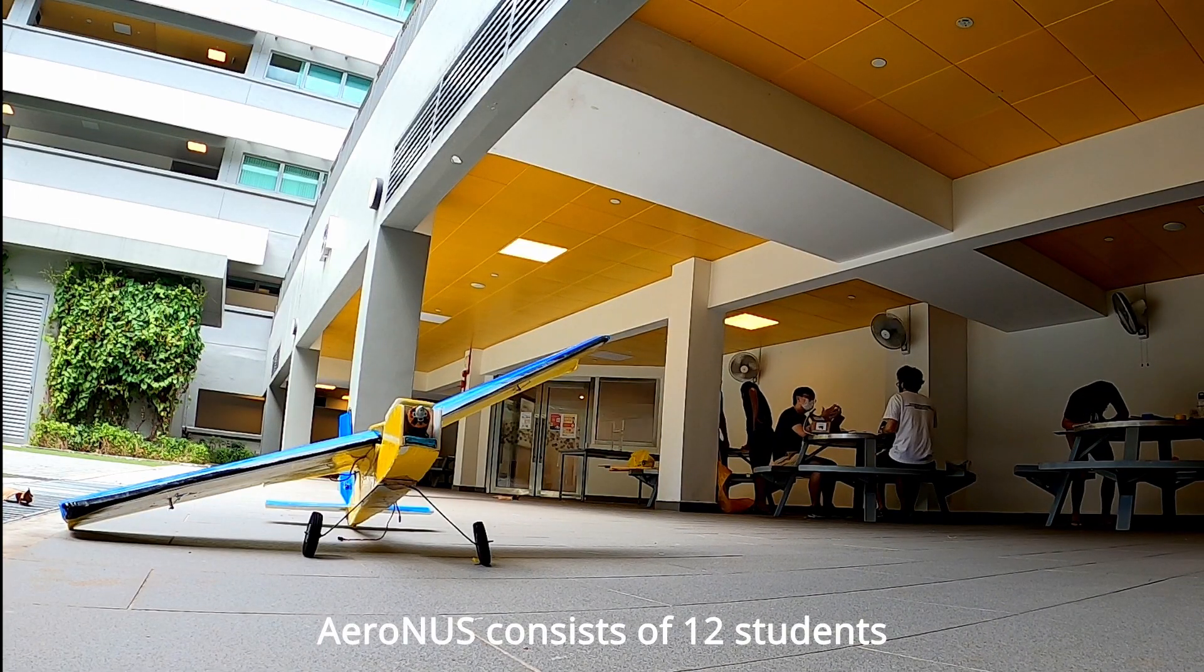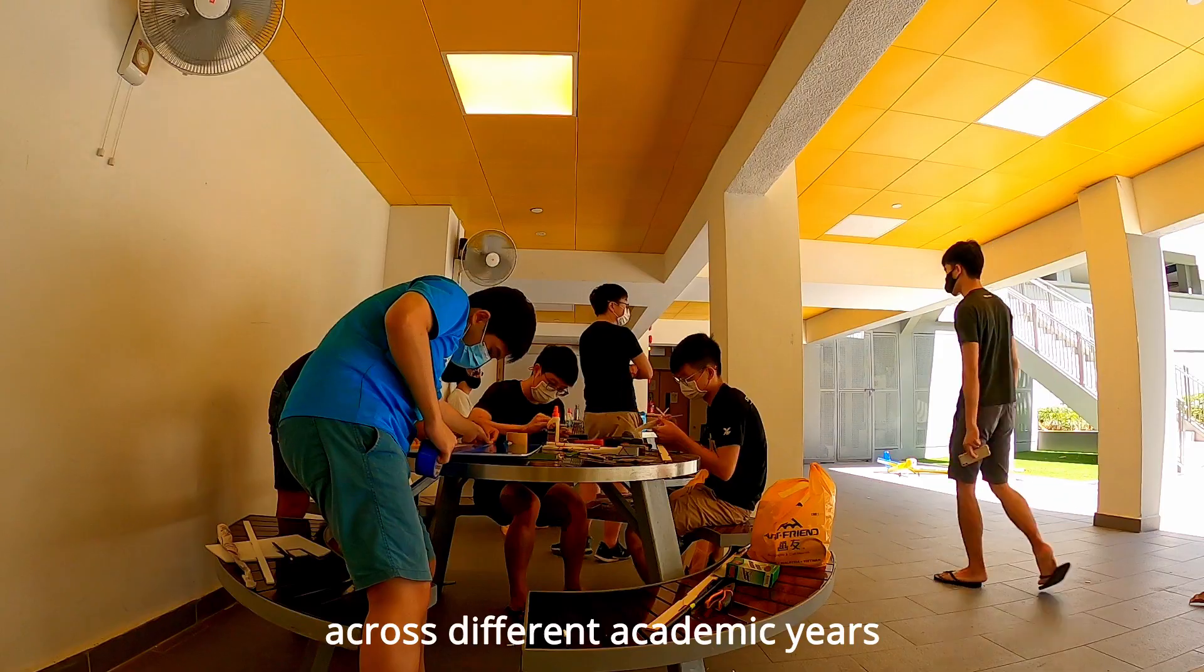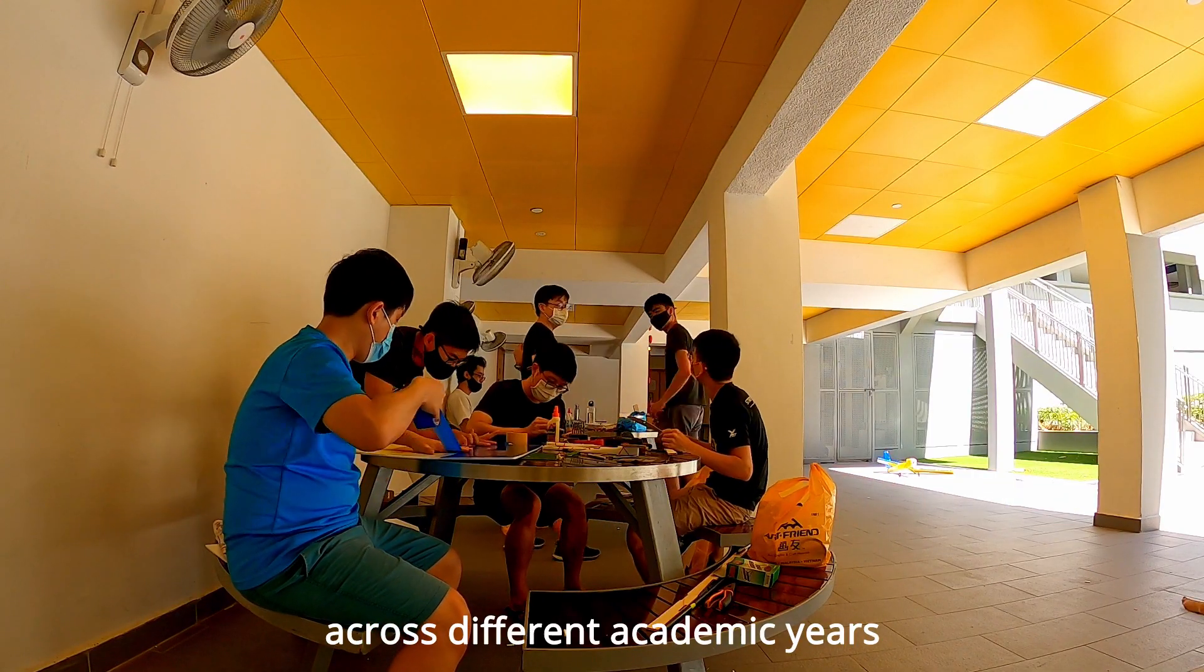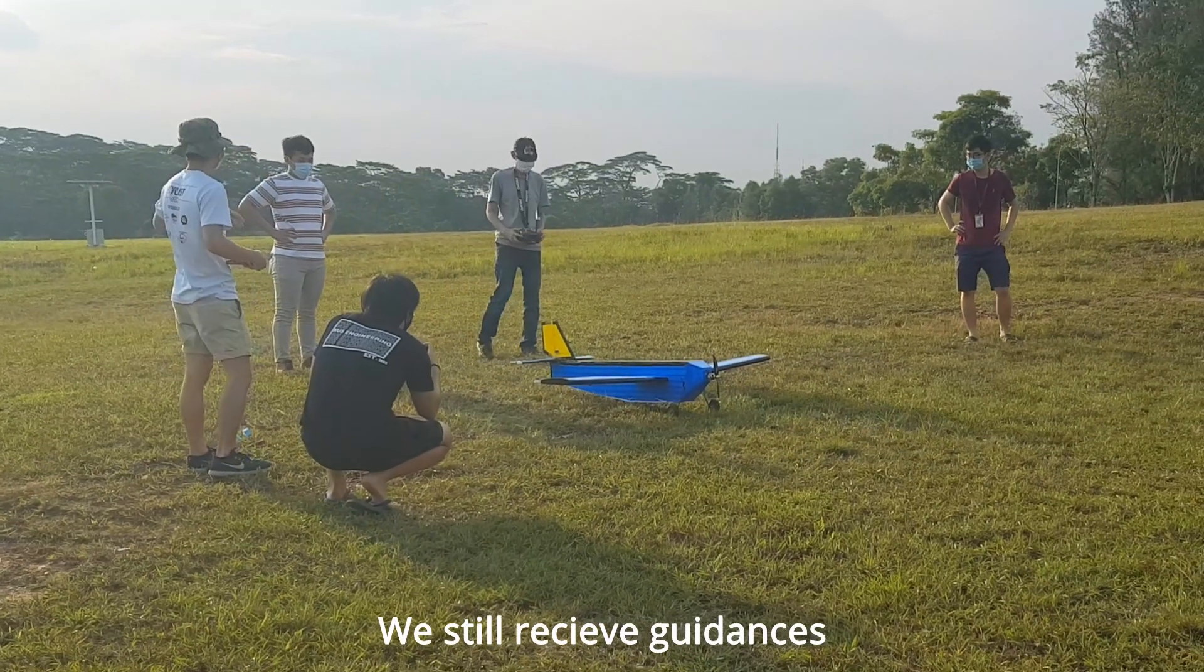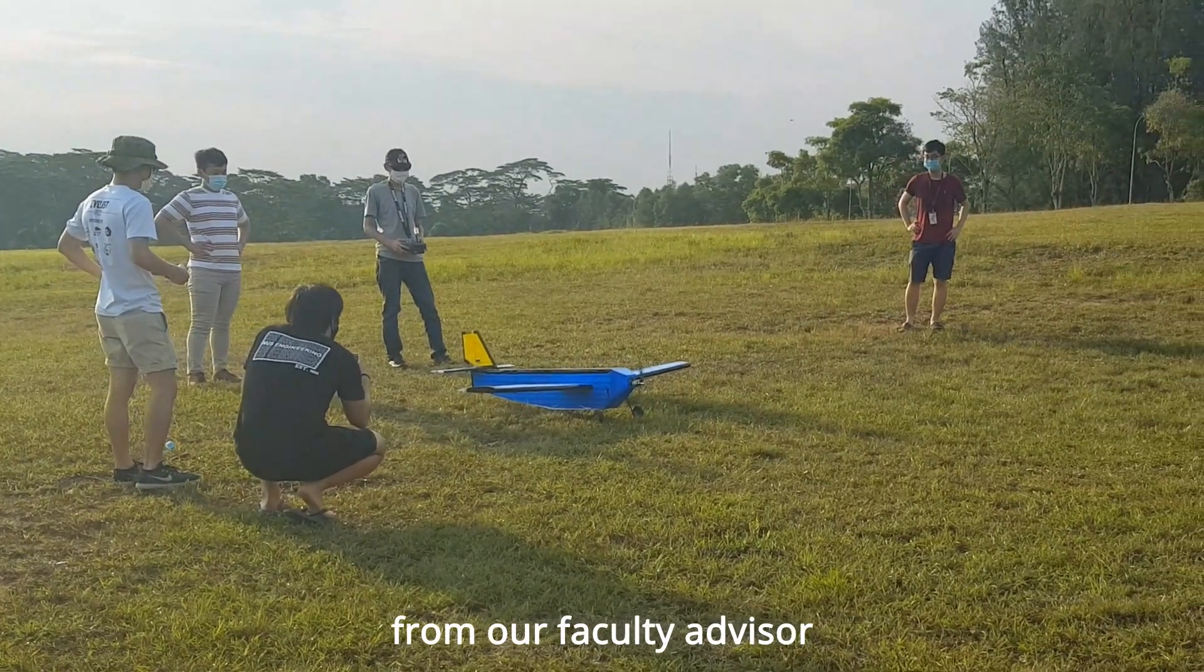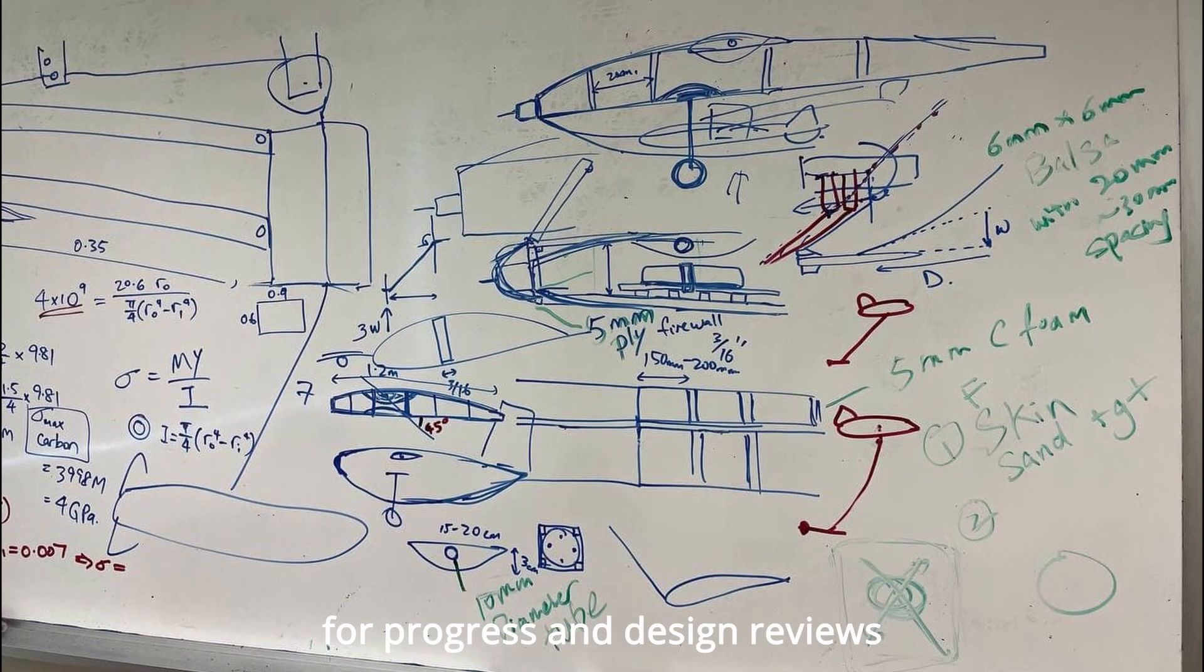This year, Arrow NUS consists of 12 students across different academic years. Although the team is entirely student-led, we still receive guidance from our faculty advisor weekly for progress and design reviews.